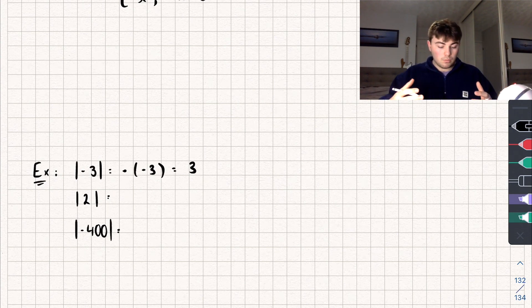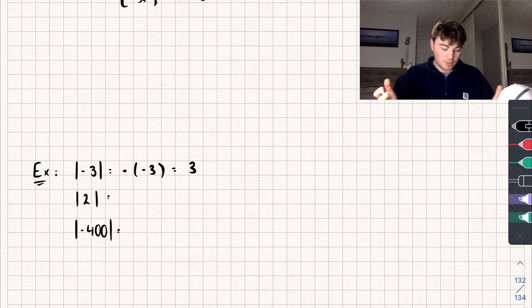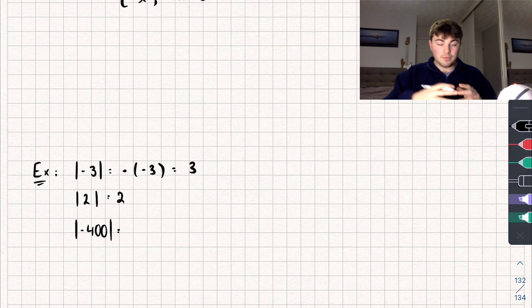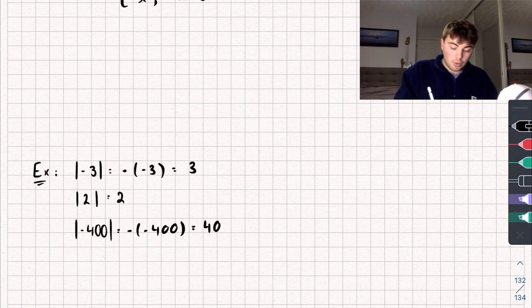The modulus of 2: well 2 is greater than or equal to 0 and so it just outputs 2. So the modulus of 2 is 2. The modulus of negative 400: well 400 is strictly less than 0 and so I calculate negative negative 400, and that's just going to output positive 400.